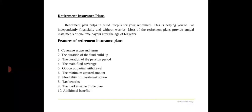The next benefit is option of partial withdrawal. The plan must not have rigid or inflexible terms of withdrawal during the period of fund build-up. There should be a feature that allows you to withdraw a particular percentage of the corpus in the event of an emergency or requirement. The next benefit is the minimum sum assured amount — a crucial feature that tells you the amount the insurance will provide as an annuity benefit after the term period is over.